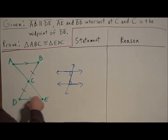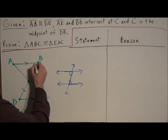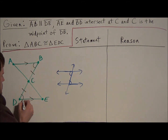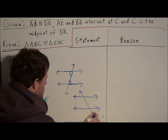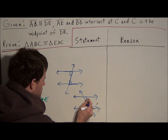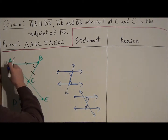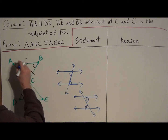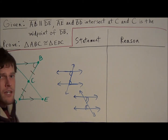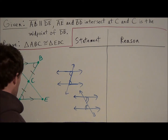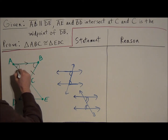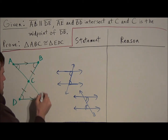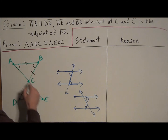In our diagram, if we look for the Z-shape, that tells us angle B is congruent to angle D. And if we draw the transversal the other way, we get a backwards Z — so angle A is congruent to angle E. So we actually have two pairs of alternate interior angles from these parallel lines.